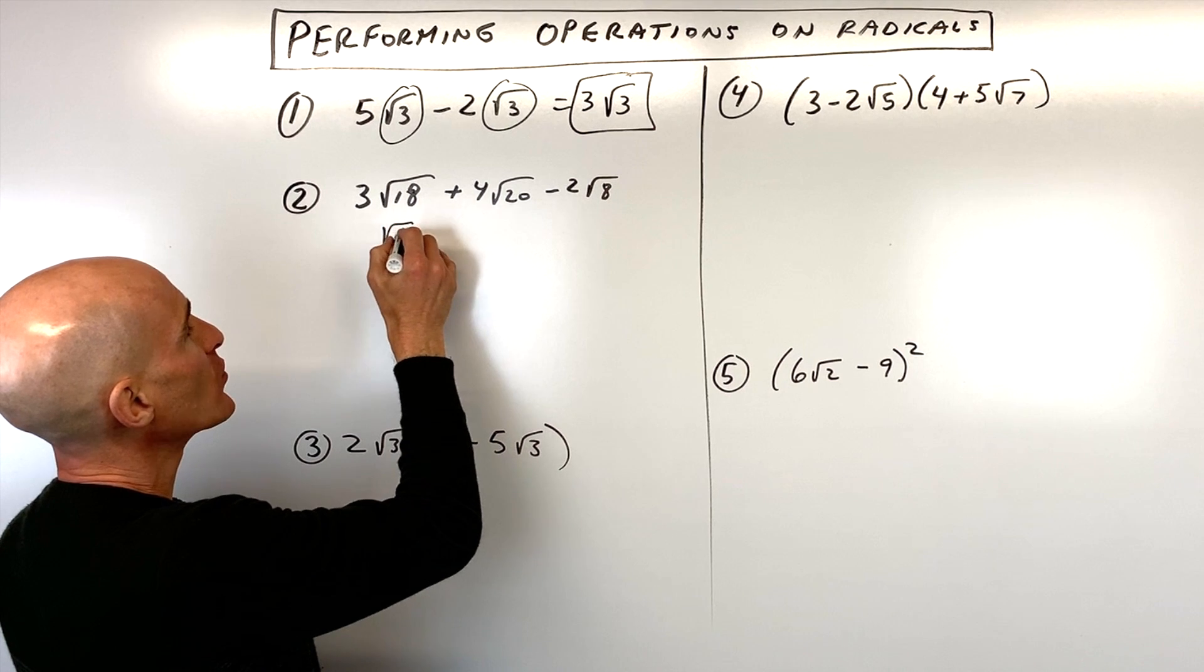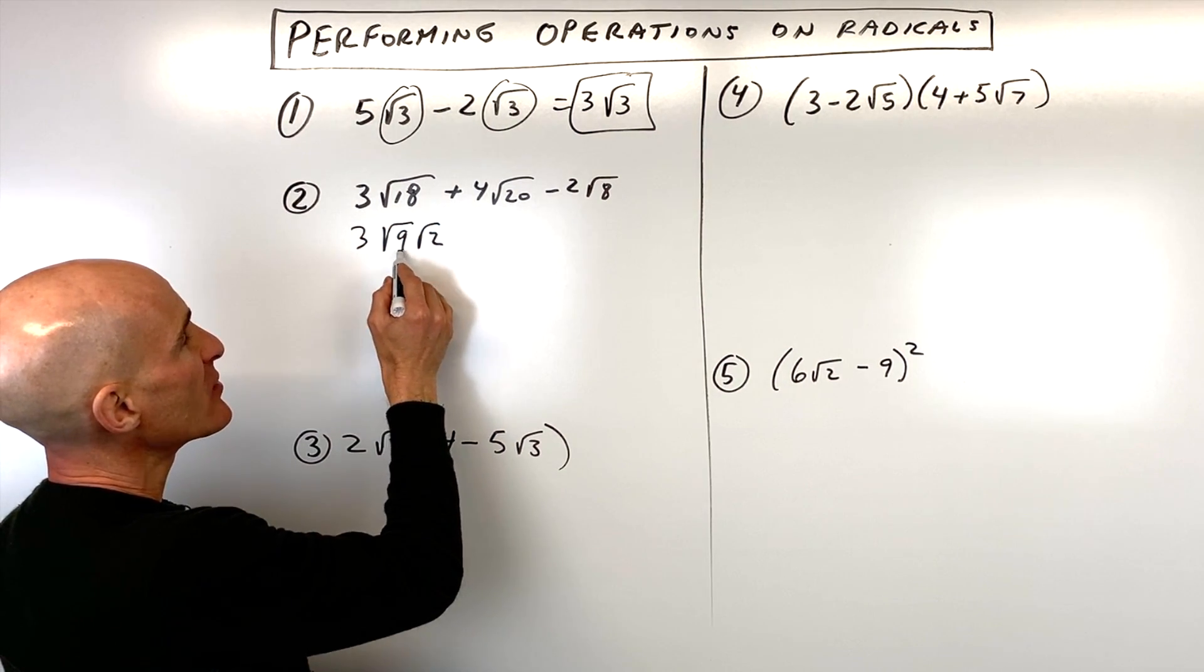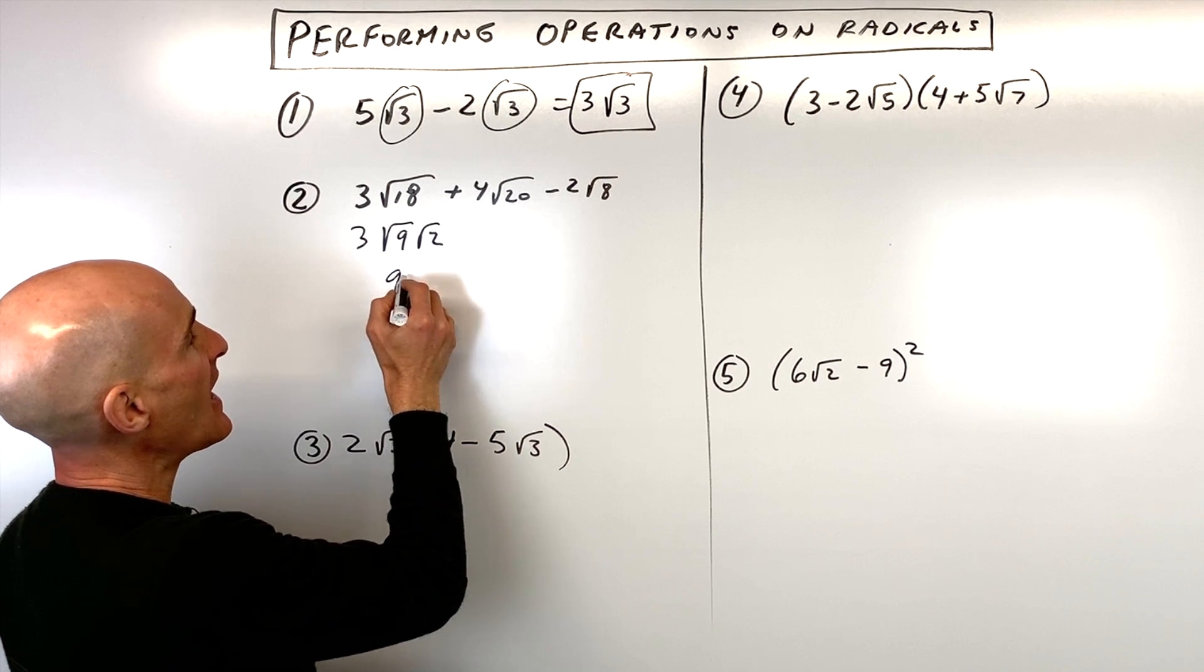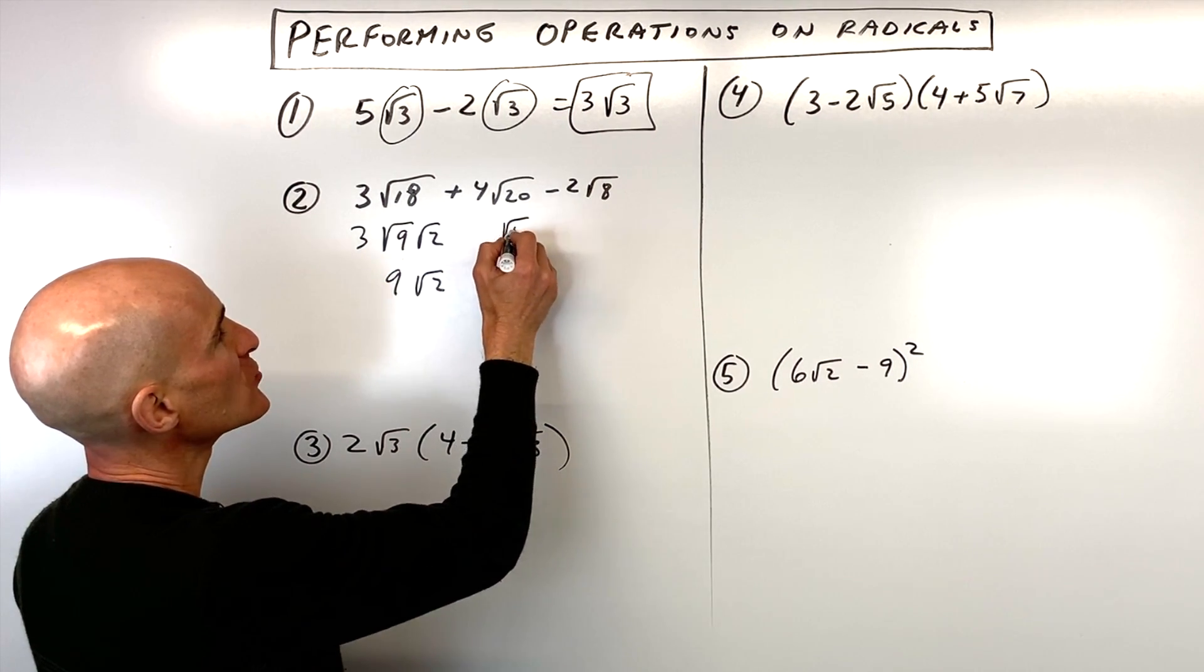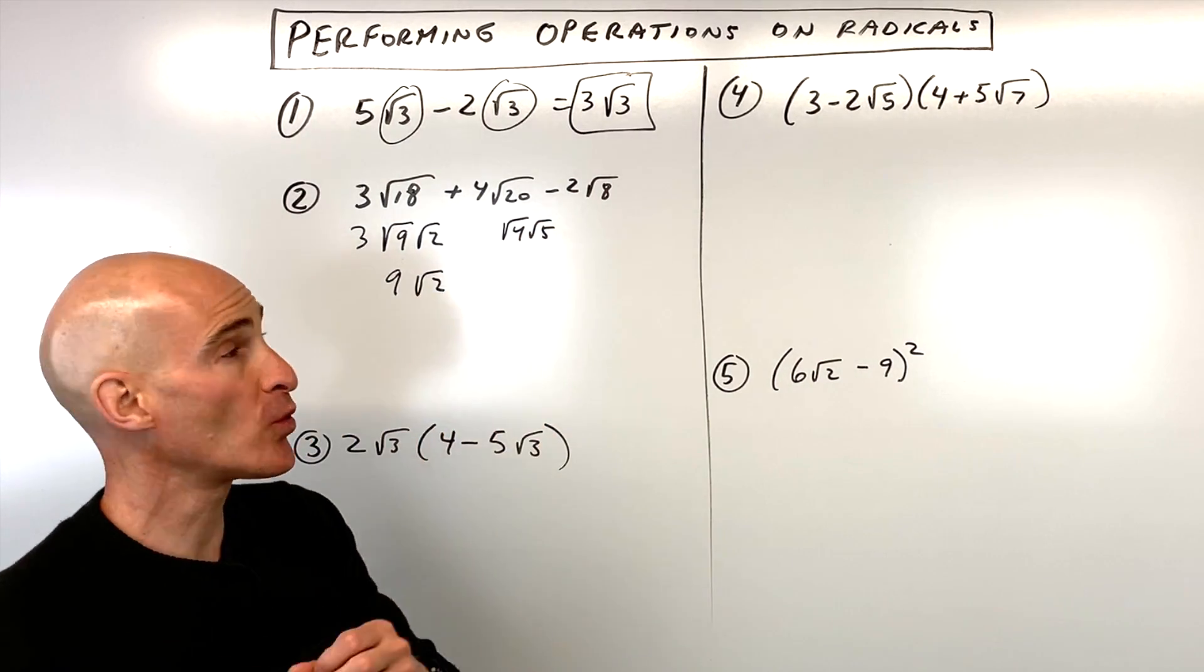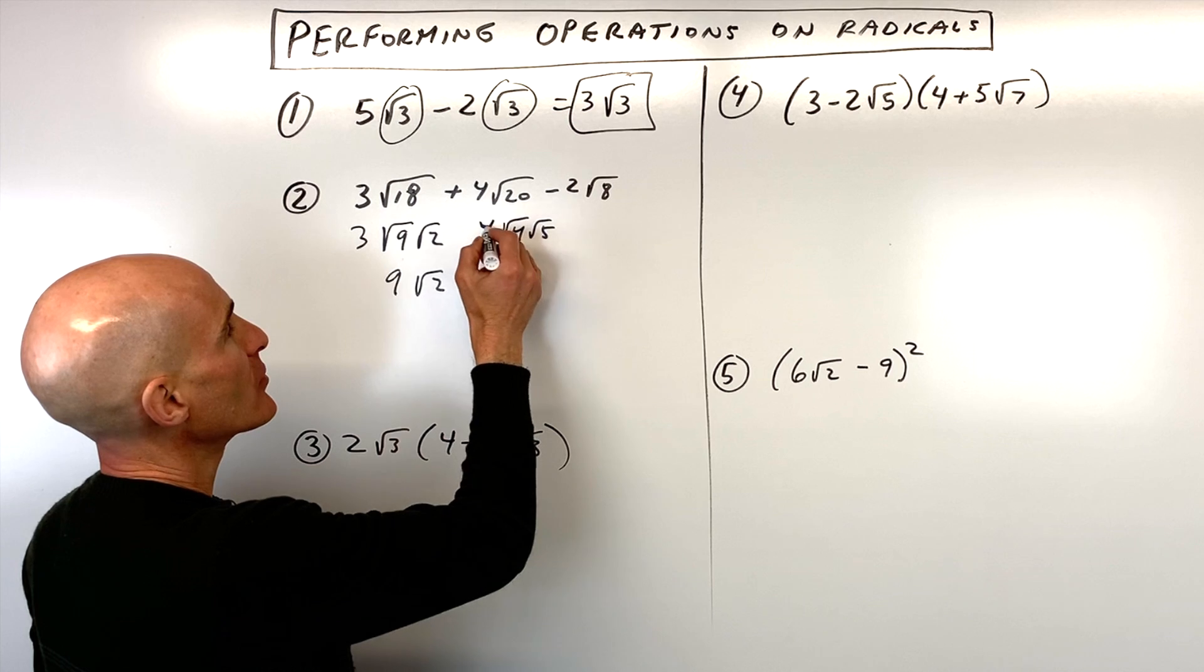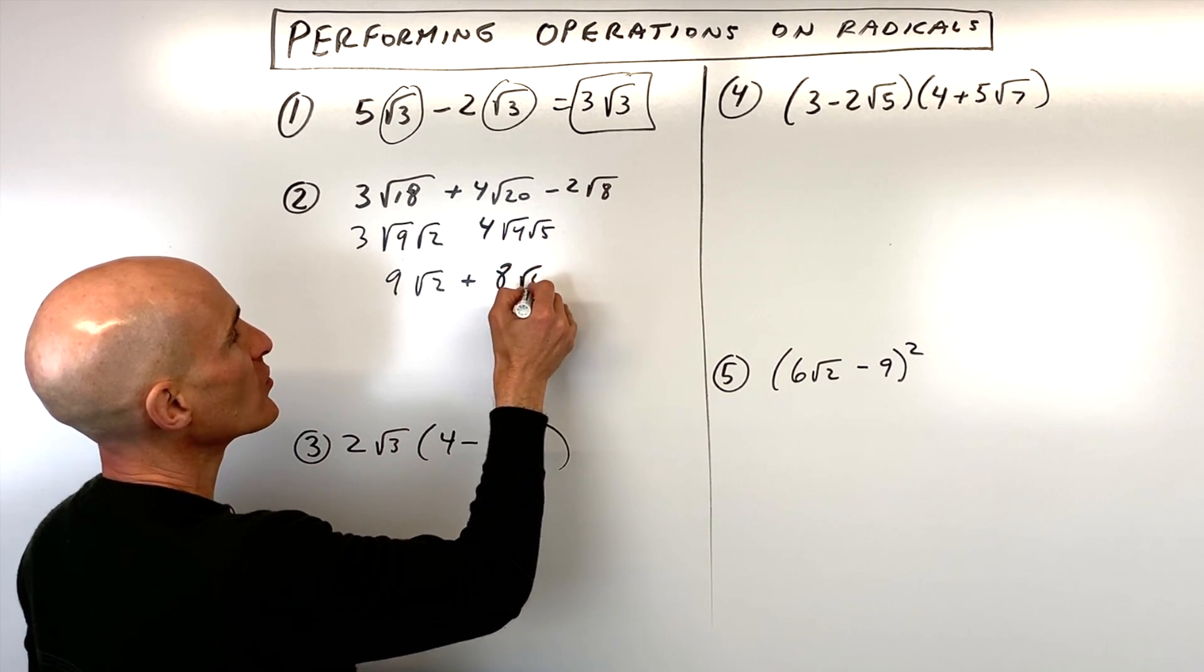square root of 18 is really square root of nine times square root of two. And square root of nine is three times three, which gives us nine square root of two. Over here, square root of 20 is really like four times five. Now, notice what I'm doing is I'm trying to divide out a perfect square. And so then what we have here is square root of four is two times four is eight square root of five.